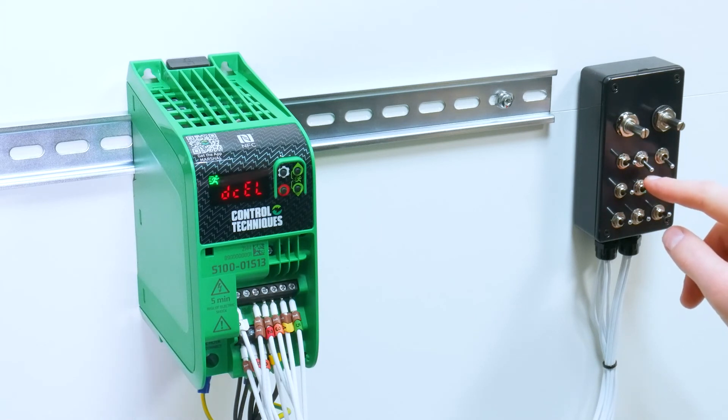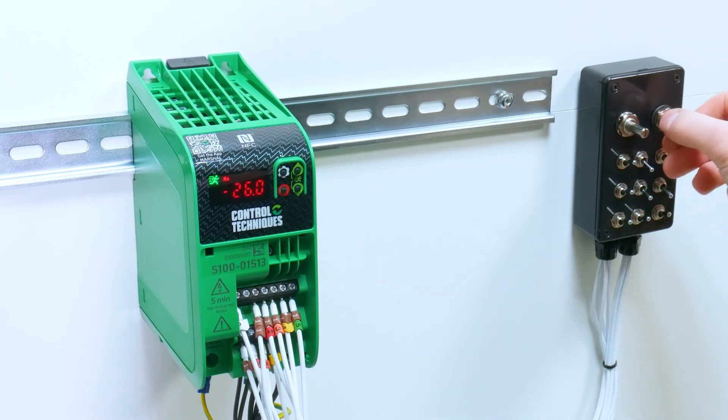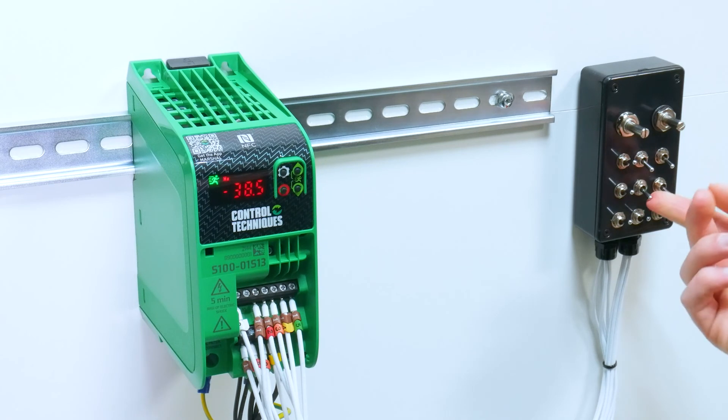And then engage the run reverse and the motor will run in reverse. Removing the run reverse, the display will show decel again.